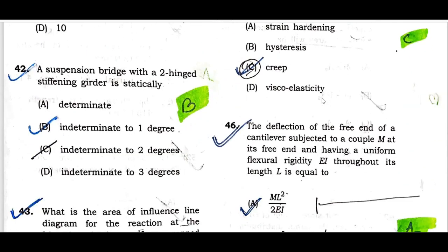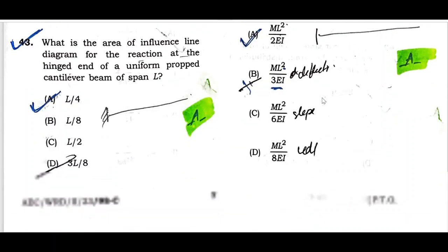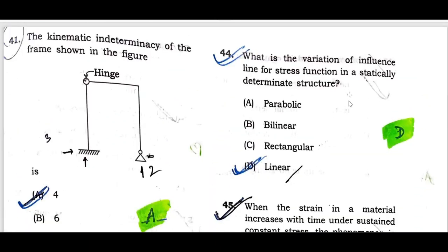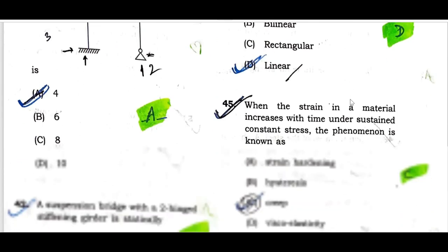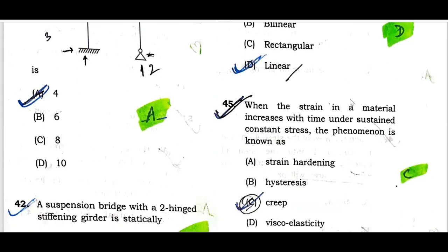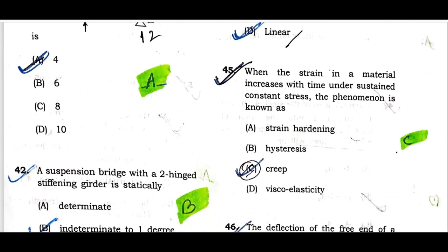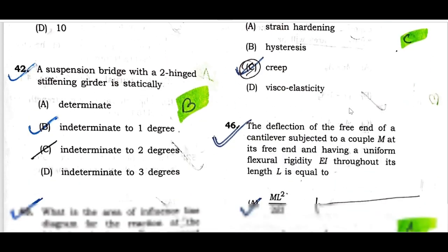Question number forty-two: A suspension bridge with two-hinged stiffening girder is statically indeterminate to one degree. Option B is correct. Question number forty-three: The area of the influence line diagram for the reaction at the hinge end of a uniform propped cantilever beam of span L is L by 4. Option A is correct. Question number forty-five: When strain in a material increases with time under sustained constant stress, the phenomenon is known as creep. Option C is correct.